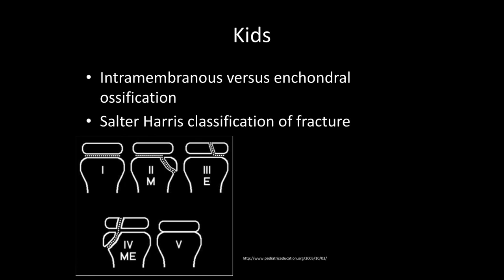Kids are just different — bringing up these concepts again. We were talking about ossification centers earlier. Most of the skeleton is enchondral ossification, developing from a cartilaginous matrix first. With kids, it's really important to get good films because if there's injury, not only do we care about articular extension, but if there's an injury to the physis — the growth plate — what can happen is early closure, leading to limb length deficiencies. This is the Salter-Harris classification of fractures. Type 1 is through the growth plate, and types 2, 3, 4, and 5 are other variations thereof.